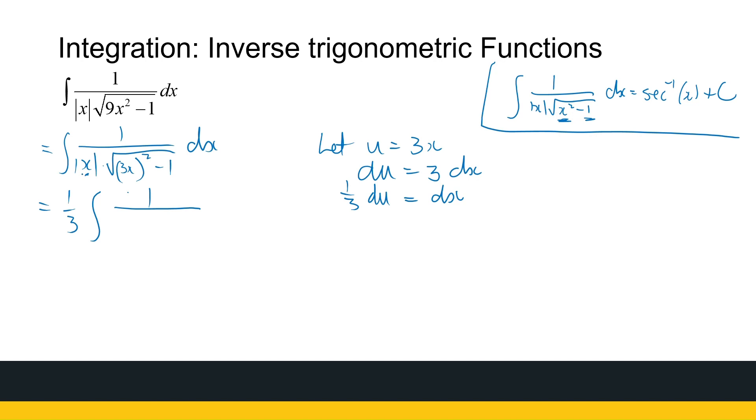So that gives me a third times the integral of 1 over, now here I've got an absolute value of x. What is x? Well, if u is equal to 3x, then I know x is equal to u over 3. So that's the absolute value of u over 3 times the root of u squared minus 1 du. So we're nearly there. We can't just say this is arc sec of u because now we've got a u over 3 here. But it's just the absolute value of u divided by 3. So we can write that as a third times the integral of 1 over, the absolute value of a third is just a third,